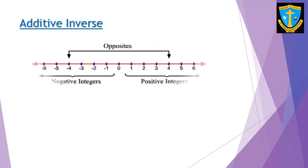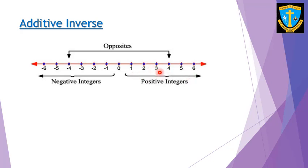Additive inverse means the opposite. Zero does not have any additive inverse — the inverse of zero is zero itself. For example, the opposite of 4 is negative 4, and the opposite of negative 3 is positive 3. You can write a positive sign for positive integers or leave it without a sign, but we must always use the negative sign to show negative integers.